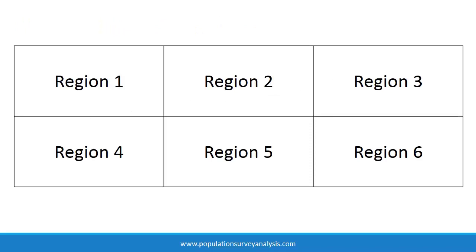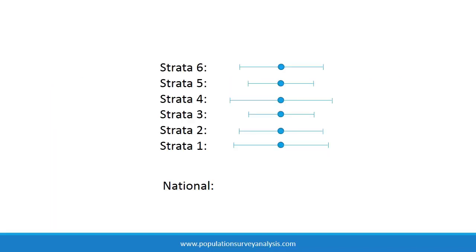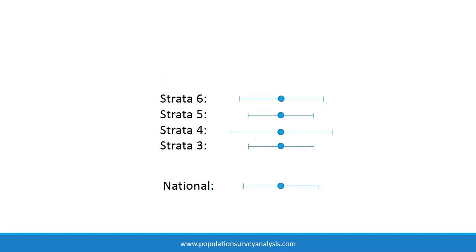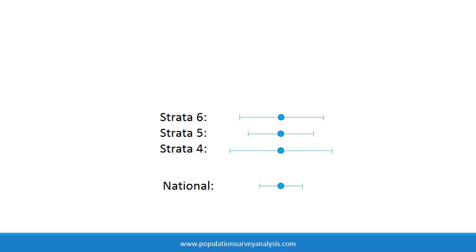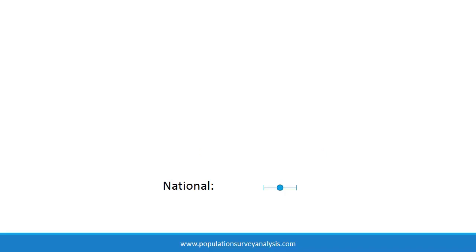For national estimates, stratification can slightly improve the precision of estimates if the outcome follows a geographic pattern. For example, if we are estimating the percent of women in polygamous marriage, and polygamy is practiced mainly within one region. This is because there is less variation within a given region compared to the country overall. Say a country has six strata, and each stratum has less variation within than the overall sample. Then we could generate an estimate at the national level with more certainty than if we had selected a simple random sample nationwide.